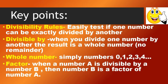So these are our key points. Divisibility rules easily test if one number can be exactly divided by another. Divisible by: when you divide one number by another, the result is a whole number or no remainder.